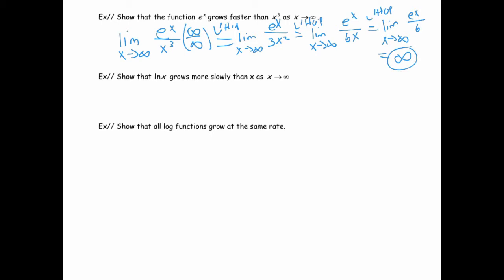Finally we get e to the x over 6, which is infinity over a constant — so the limit is infinity. Since we started with e to the x on top and got infinity, by our definition e to the x grows faster than x cubed. Next, let's show that ln of x grows more slowly than x. Logarithmic growth is one of the slowest types of growth. Taking the limit as x goes to infinity of ln of x divided by x — this is an infinity over infinity case, so we use L'Hôpital's rule. The derivative gives one over x divided by one, which equals zero. Since ln of x was on top and the limit is zero, this proves ln of x grows more slowly than x.